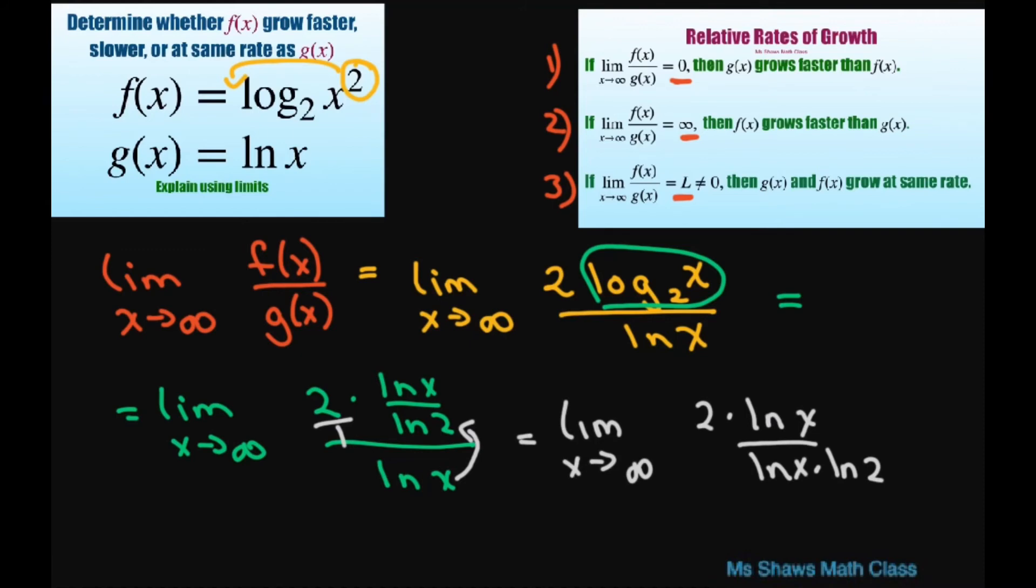Now what happens? Now we can apply the limit. This cancels out, so we get our limit is 2 divided by ln of 2, which is a fixed number that's not equal to zero.